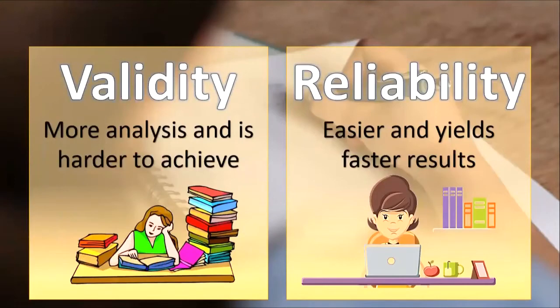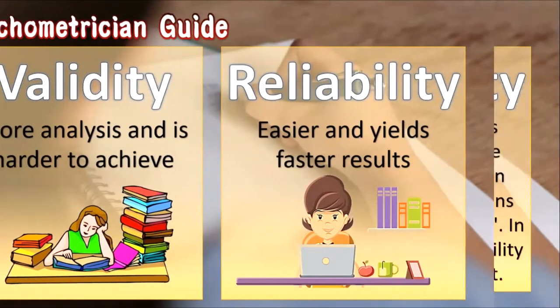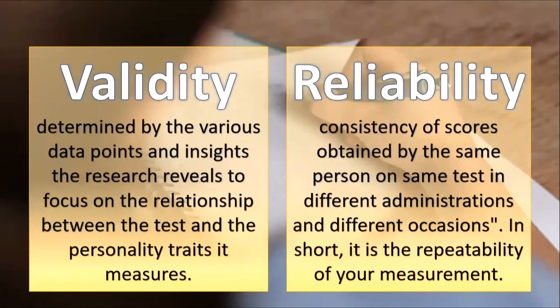In validity, there is more analysis and it is harder to achieve. In reliability, it is easier and yields faster results. Validity is determined by the various data points and insights the research reveals, focusing on the relationship between the test and the personality traits it measures. In reliability, there is consistency of scores obtained by the same person on the same test across different administrations and occasions — in short, it is the repeatability of your measurement.